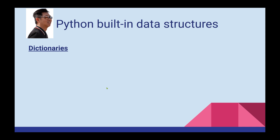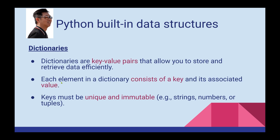Now let's talk about dictionaries. Dictionaries are key-value pairs that allow you to store and retrieve data efficiently. Each element in a dictionary consists of a key and its associated value. Keys must be unique and immutable.